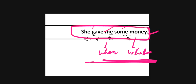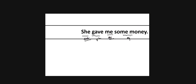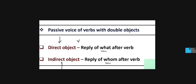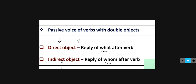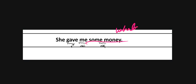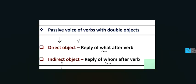In the sentence 'she gave me some money,' if both objects are identified — 'me' and 'some money' — we have one verb and two objects. The direct object is what answers 'what' — so 'some money' is the direct object. The indirect object answers 'whom' — so 'me' is the indirect object. What is replied to 'whom' is the indirect object, and what answers 'what' is the direct object.